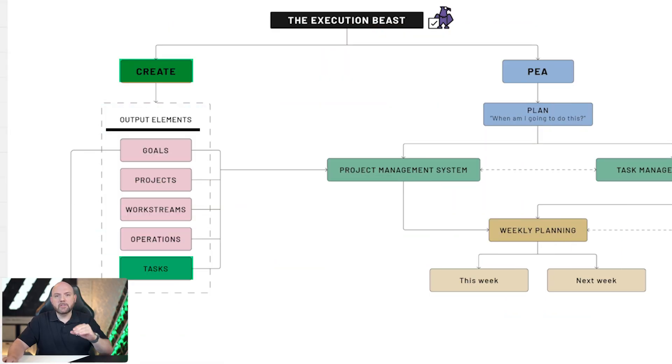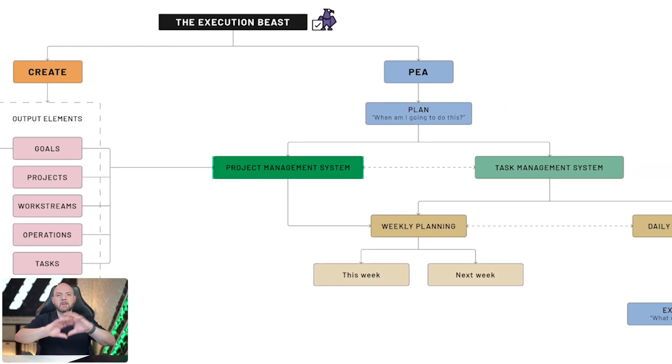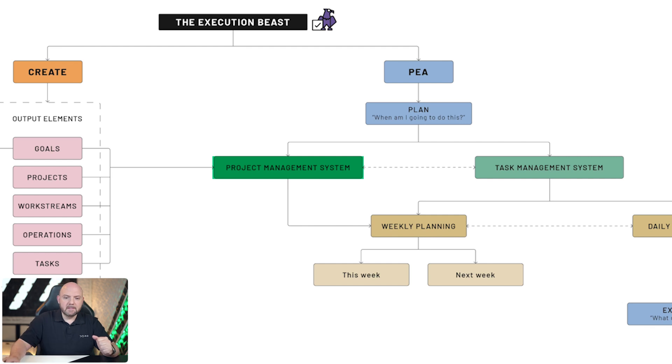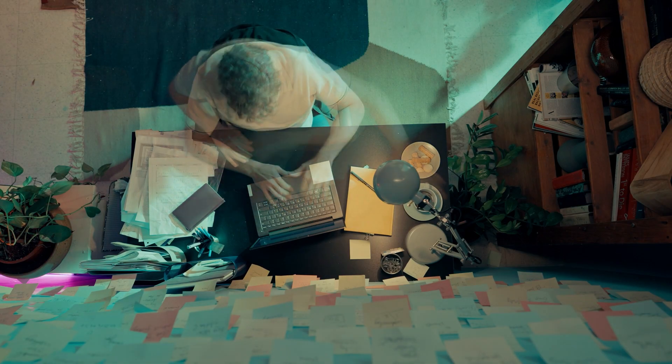The key here is that we create output elements — let's keep it simple and say we create a task. We create it in the project management system, in the BPM area of the iCore framework, which stands for business project management. We assume the task is agreed with the team, aligned with our goals. Now you're back at your desk from a project meeting and you ask: When am I going to do this? That's where planning happens — and let's go through this in a tool-agnostic way.